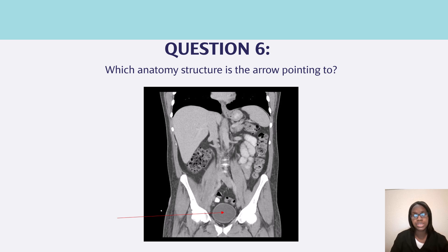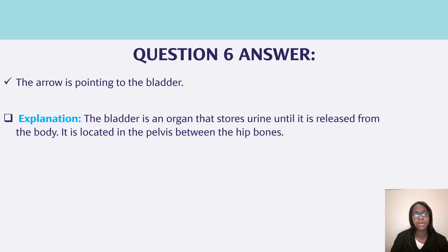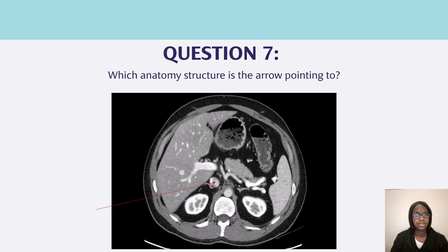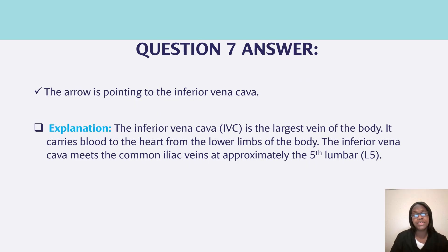Question six, which anatomy structure is the arrow pointing to? The arrow is pointing to the bladder. The bladder is an organ that stores urine until it is released from the body. It is located in the pelvis between the hip bones. Question seven, which anatomy structure is the arrow pointing to? The arrow is pointing to the inferior vena cava. It is the largest vein of the body. It carries blood to the heart from the lower limbs. The inferior vena cava meets the common iliac veins at approximately the fifth lumbar, or L5.